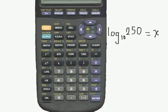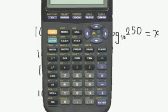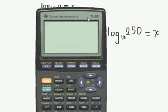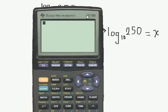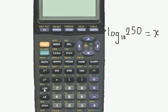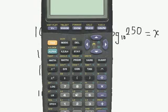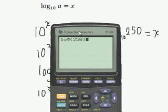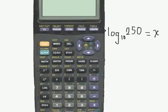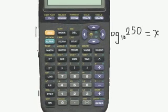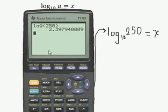Now unfortunately the whole calculator won't fit on the screen, so I'll have to move back and forth. What we need to do is take log of 250. If I press the log button, it shows up the log there. I enter in 250, close the brackets. So log 250 is 2.39.